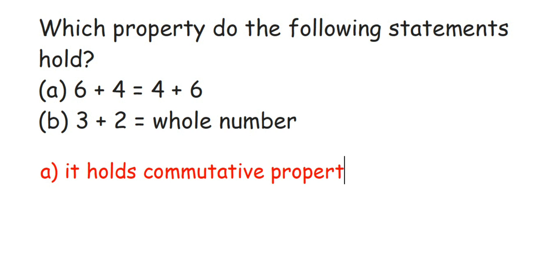That's it. Then the next one. In the second one they're saying 3 plus 2 is equal to whole number, means when you're adding two whole numbers your final answer is also a whole number. So 3 plus 2 is actually 5. We have not given 5 here. They're saying that if you're adding two whole numbers, your